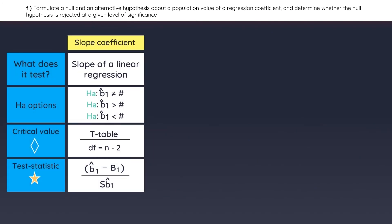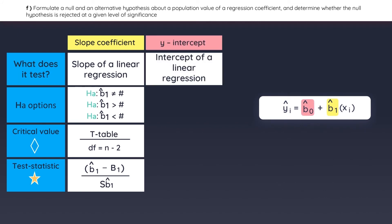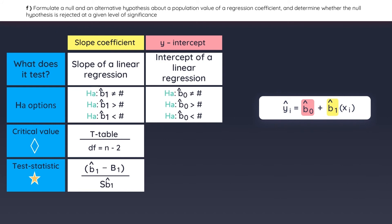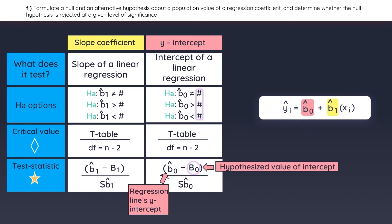Here is the cheat sheet that summarizes the steps we just covered for a slope test. In the same way that we can conduct a hypothesis test on the slope, we can use the same process to test the Y-intercept in a linear regression. You can test whether the Y-intercept is statistically different from, less than, or greater than some value. The critical values are found using the t-table, and the formula for the test statistic uses the Y-intercept, the hypothesized value, and the standard error of the intercept.